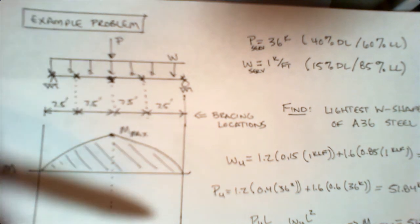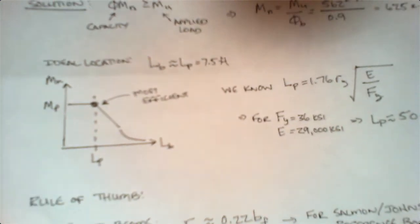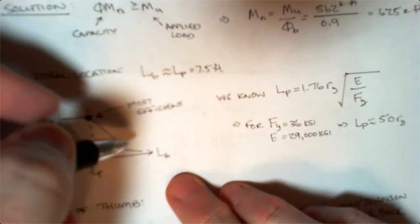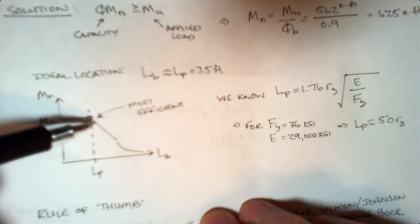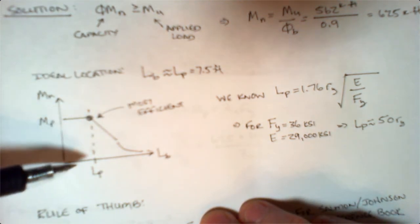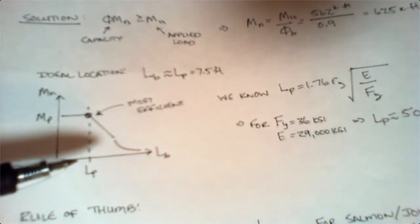That forces us into needing to know not only Lp but also Lr. If you look at our calculation here, we would have to pick up the Lr that's here, and that means I'm now iterating on this and trying to come up with a moment that's greater than the one you need. These sections and sizes will get really big really fast.